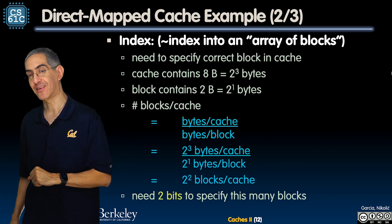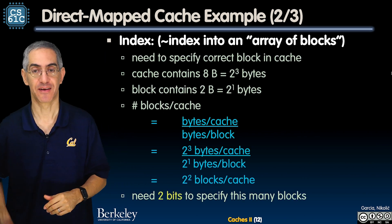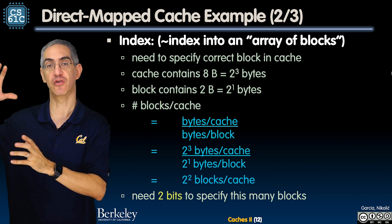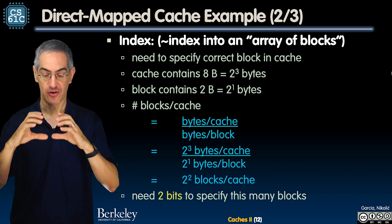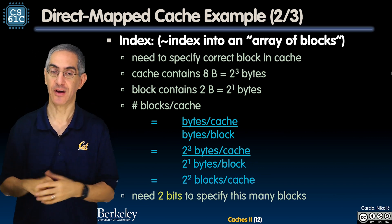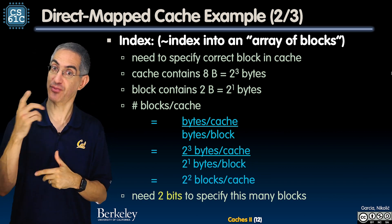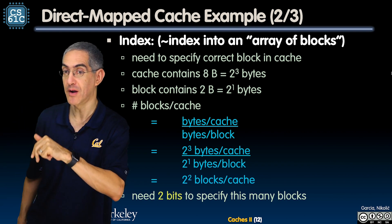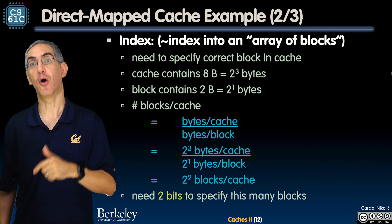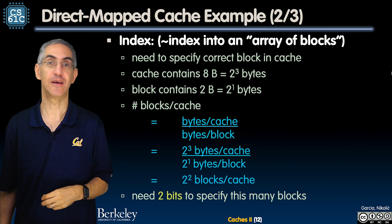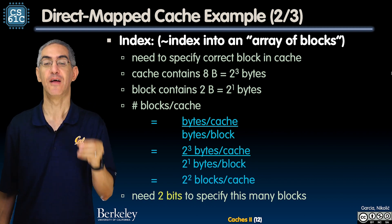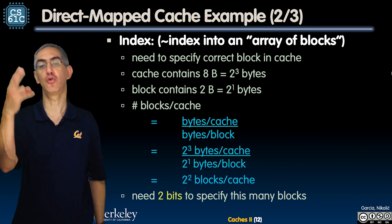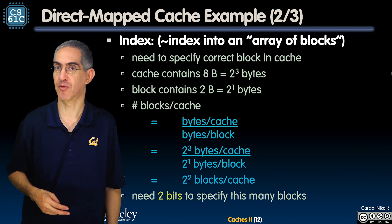What's my index? Same idea. Total cache is eight bytes — two to the three. A block is two to the one bytes. Two to the three over two to the one is three minus one equals two. So two to the two blocks per cache, meaning I need two bits for my index.